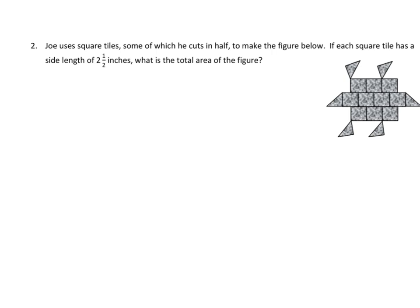It says, Joe used square tiles, some of which he cuts in half to make the figure below. So, if each square tile has a length of 2 1⁄2 inches, what's the total area of the figure? Well, let's take a look. First of all, we need to look at how many halves we have. So, I have 1, 2, 3, 4, 5, 6. So, I have a total of 6 halves.